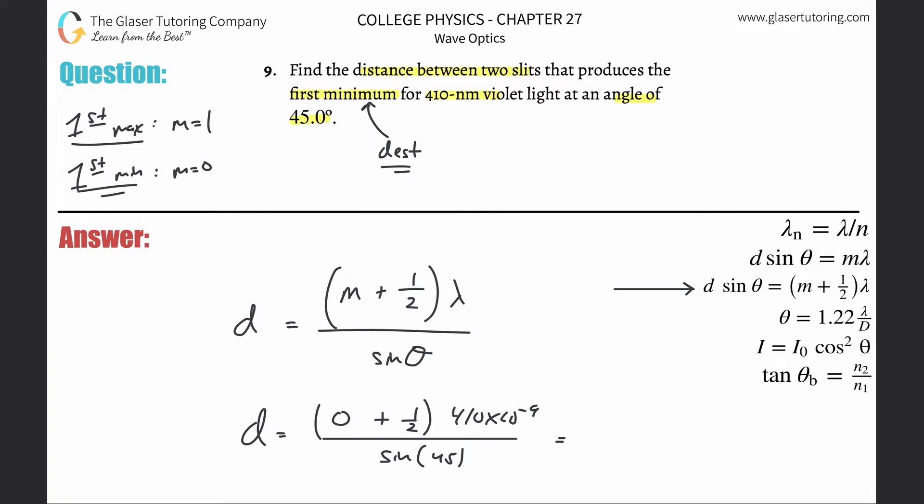So 0.5 or one half times then 410 times 10 to the minus ninth divided by then sine of 45. Make sure that calculator is in degree mode. Equals 2.9. I've been traumatized from the prior years. As you can tell.